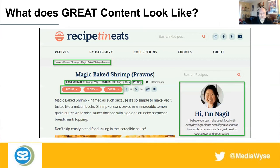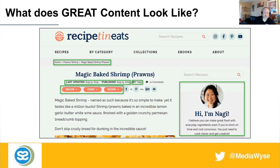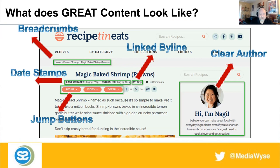What does great content look like? My focus these days is on food and lifestyle — I do a lot of work with recipe bloggers specifically, probably 90% of my business. I've audited literally thousands of food blogs and most of the top sites in the world. A good example is Recipe Tin Eats with Nagi, based in Australia — she gets around 12 to 13 million visitors a month for a food blog, which is pretty high. At the top of the page you can see breadcrumbs, date stamps, jump buttons so users don't have to scroll through large pieces of information or ads if they're in a hurry, and a clear author byline.